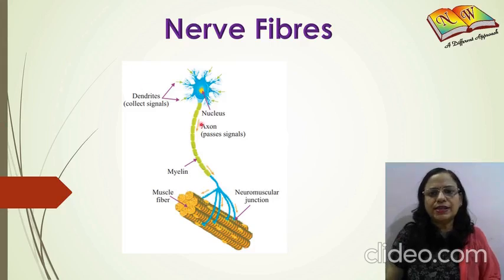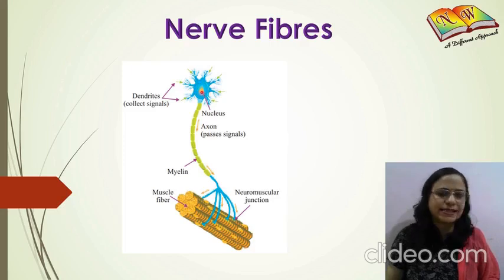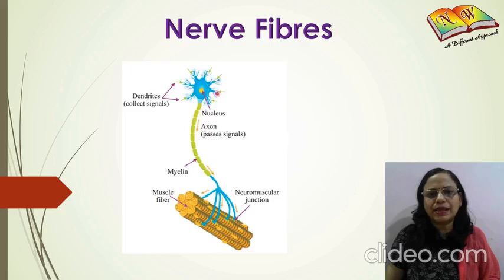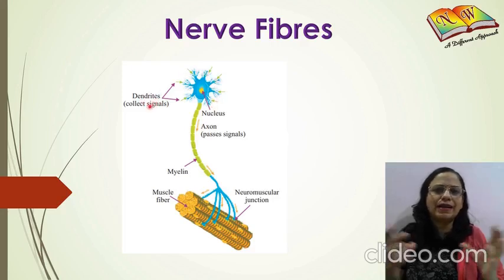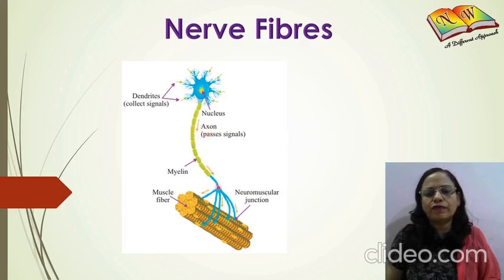Each cell of the nervous tissue is known as a nerve cell or neuron. The main cell body, shown as the blue structure, is also known as the cytone. Branches coming out of it are known as dendrites, which help in collecting impulses. There is also a long tail-like structure known as the axon, which carries impulses forward either to the next neuron or to the muscles responsible for creating a response.